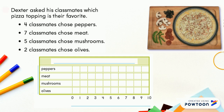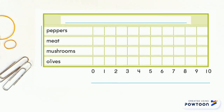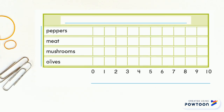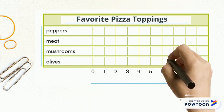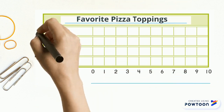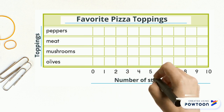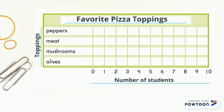Now let's go and complete the bar graph table. We are going to start by the table title. The table title will be 'Favorite Pizza Toppings.' On the left side we are going to write 'Toppings,' and down here we are going to write 'Number of Students.' Since we finished the labels, let's start shading the bars.